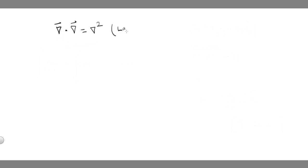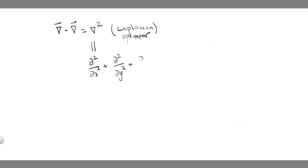Finally, if we dot a del operator with another del operator — though I will not expand and show the details, you can verify on your own — we get something called the Laplacian, or del squared. It looks like the sum of the second derivatives of some unspecified function with respect to x, y, and z. Note that this is a scalar operator, since the dot product removed the directionality of both del vectors.